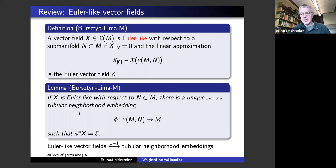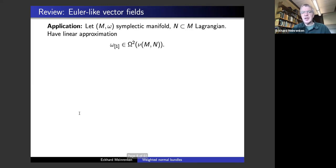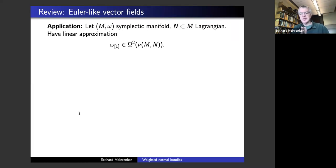Here's a typical example of how you apply this in practice: the application to Weinstein's Lagrangian embedding theorem. We assume we have a symplectic manifold and a Lagrangian sub-manifold. In this situation you can look at the linear approximation of the two-form. Lagrangian means the sub-manifold has half the dimension of the symplectic manifold and the symplectic form vanishes — the pullback vanishes. So in coordinates, the symplectic form has filtration degree one, and you can look at its linear approximation, which is a two-form on the normal bundle, which ends up being symplectic.